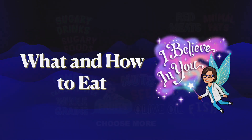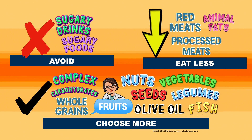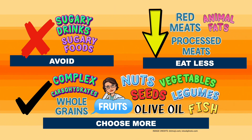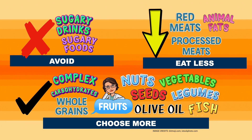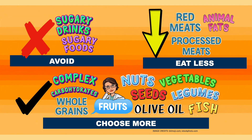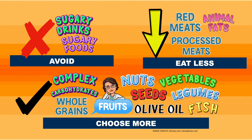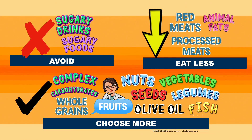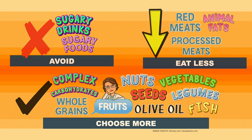It is recommended to avoid highly sweetened drinks and foods loaded with added sugars. Eat less red meats and reduce eating processed meats and animal fats like butter. Shift to unrefined carbohydrates by choosing more whole grain breads and cereals. Eat more fruits and vegetables and try to consume legumes, nuts, and seeds. Use olive oil, or alternatively peanut oil or canola oil, in preparing and cooking foods.